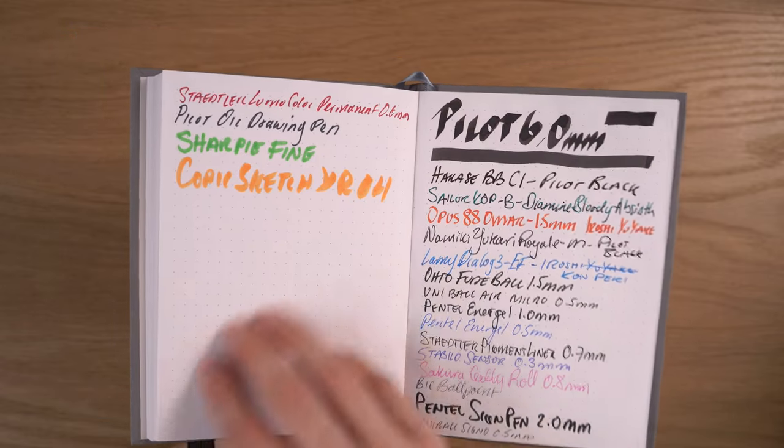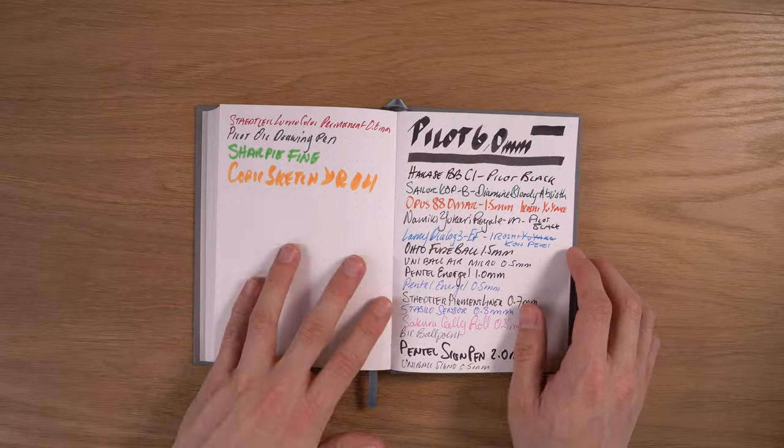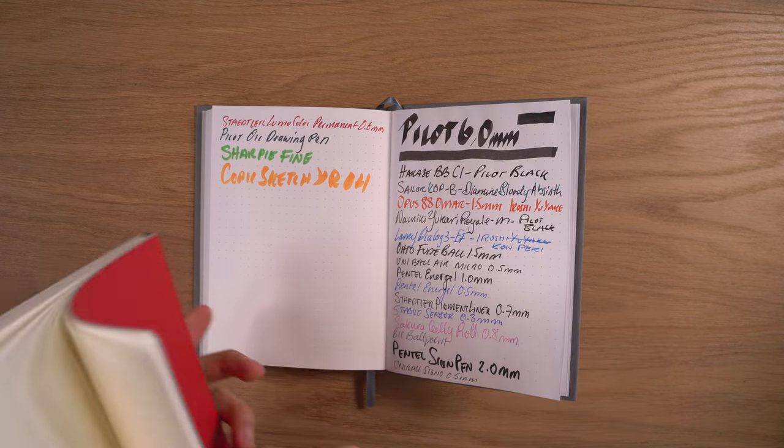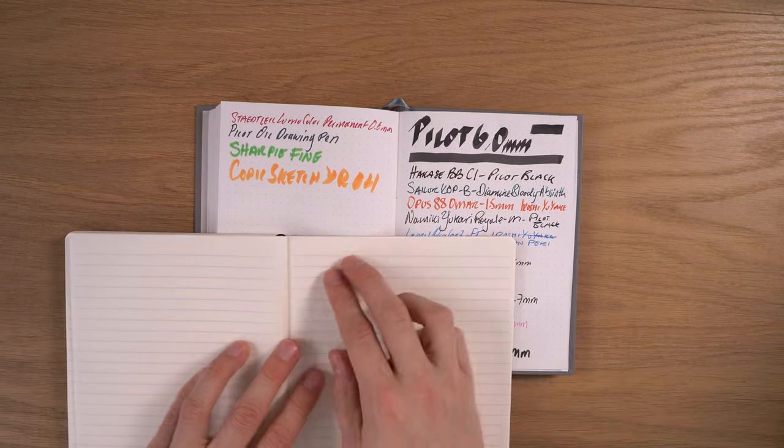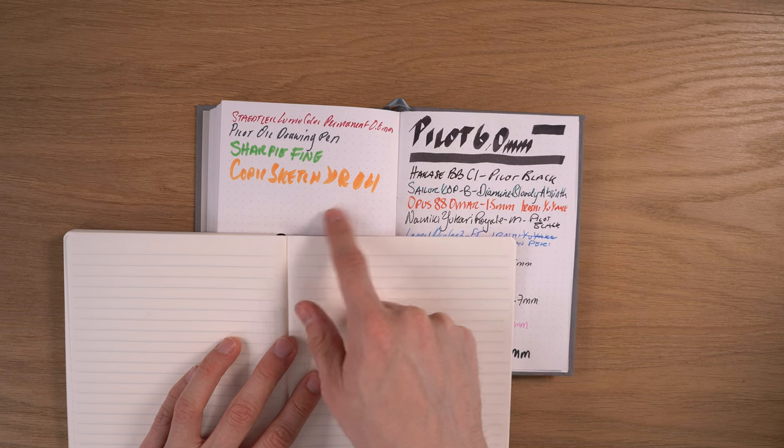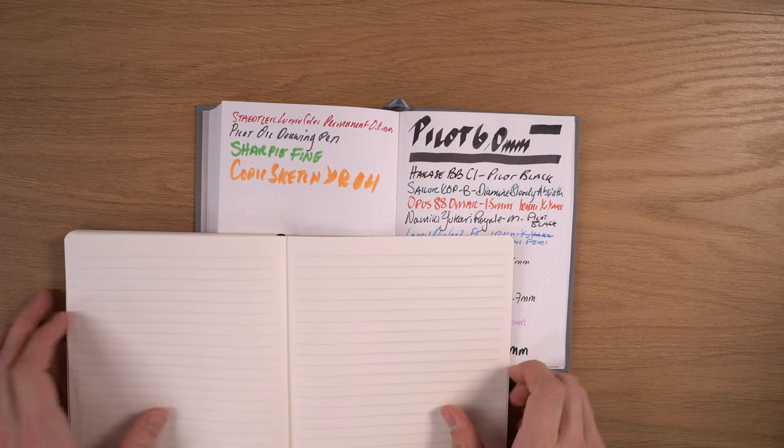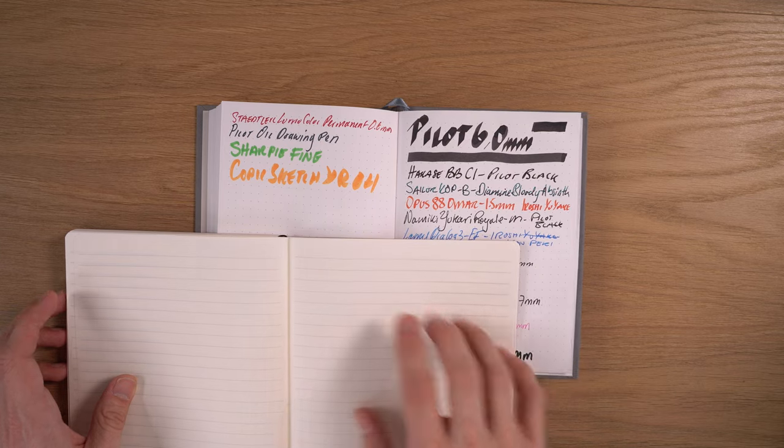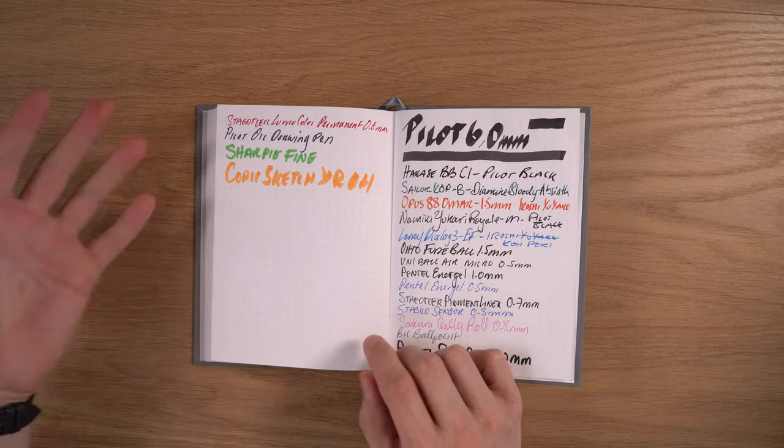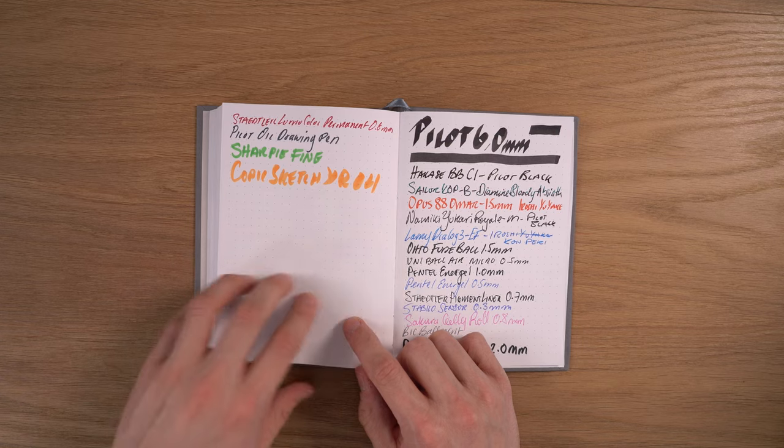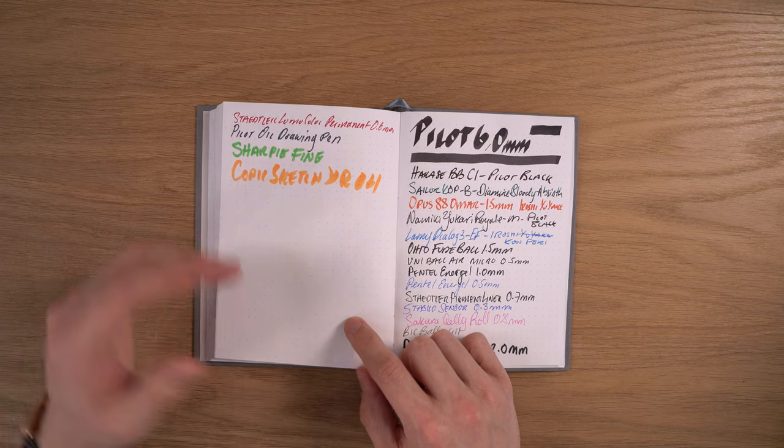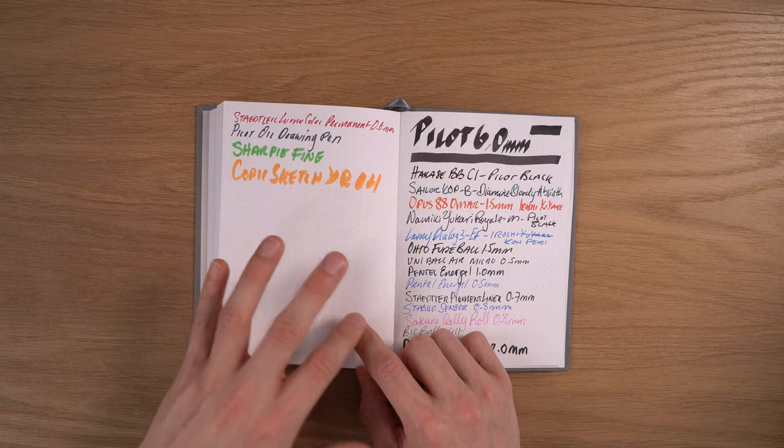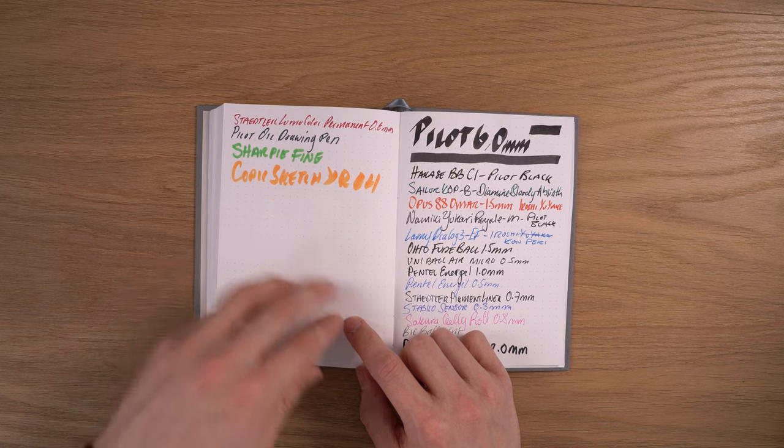In terms of writing on this paper, comparing it to other papers, compared to the Mitsubishi bank paper, you can just see right away that this is significantly whiter than the bank paper, which is sort of not quite a cream paper, but this is an off-white paper for sure. Compared to the Mitsubishi bank paper, this is a bit smoother. It's definitely a smooth paper. It's not like Rhodia where it's super slick, but there's a little bit of feedback there, not a lot, and it's really nice to write on.